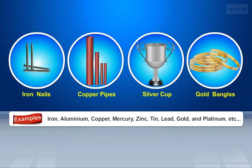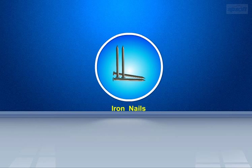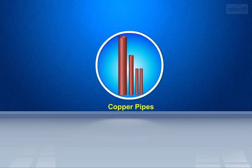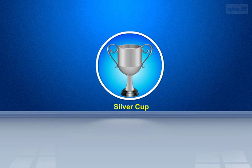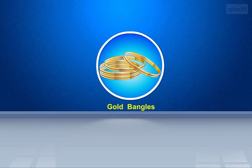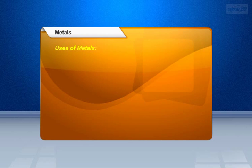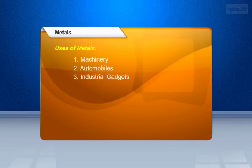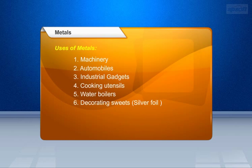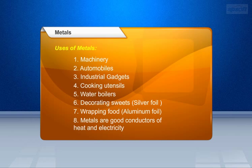Some materials manufactured using metals are: Iron nails are made up of iron metal, copper pipes are made up of copper metal, silver cups are made up of silver metal, and gold bangles are made up of gold metal. In our daily life, we use metals for machinery, automobiles, industrial gadgets, cooking utensils, and water boilers. Silver foil is used for decorating sweets, aluminium foil is used for wrapping food, and metals are good conductors of heat and electricity.